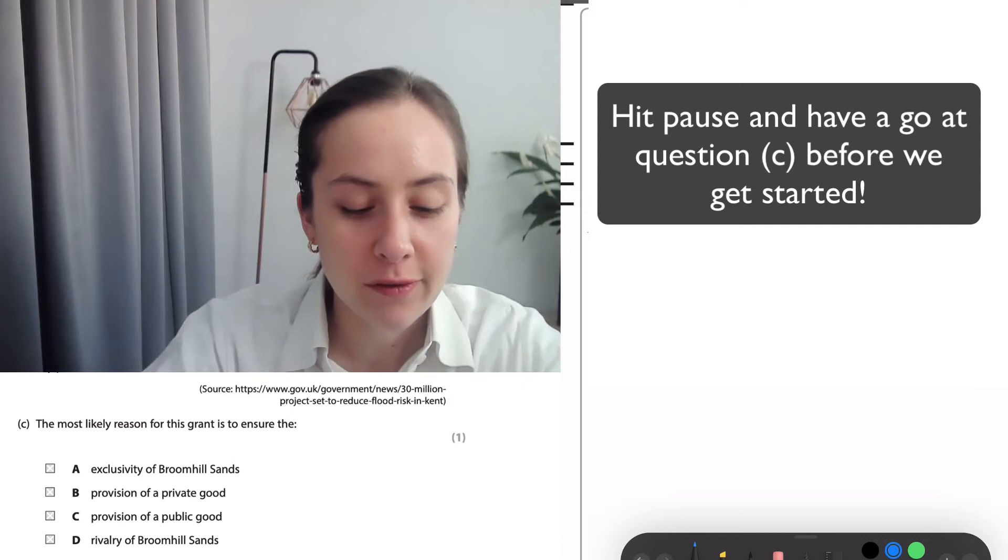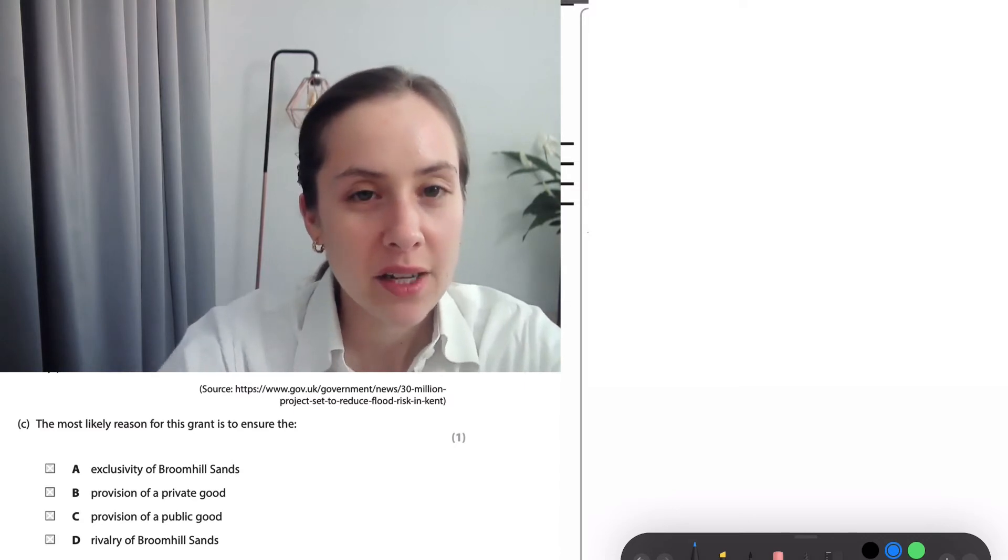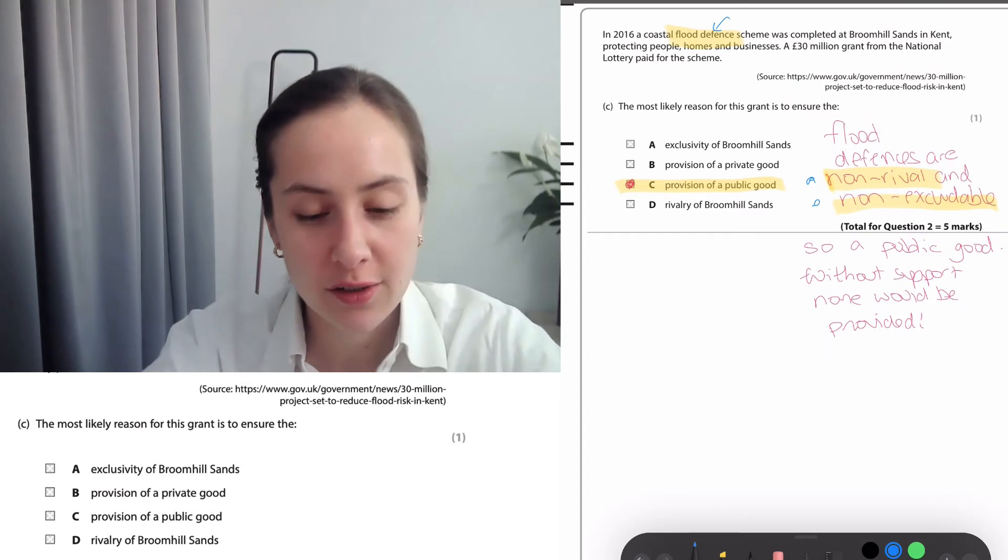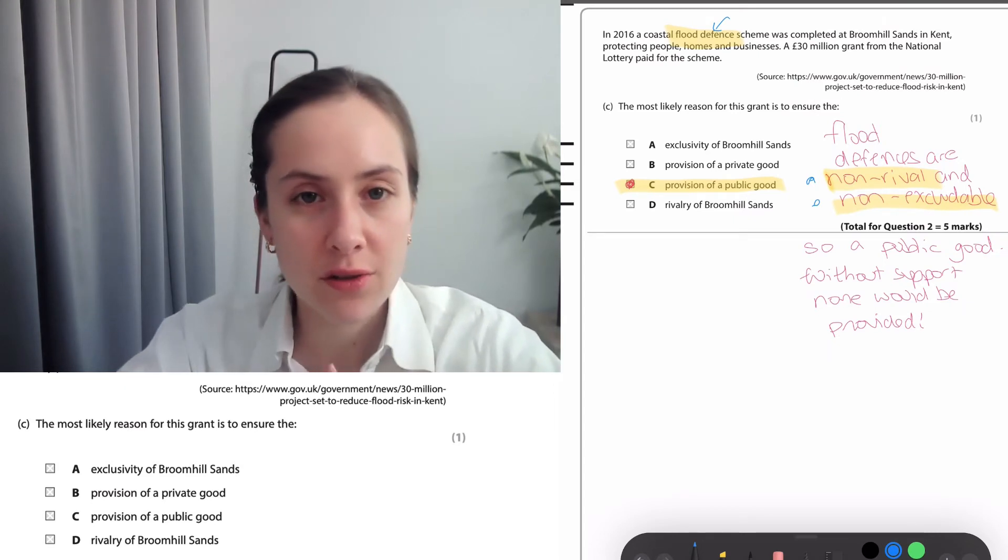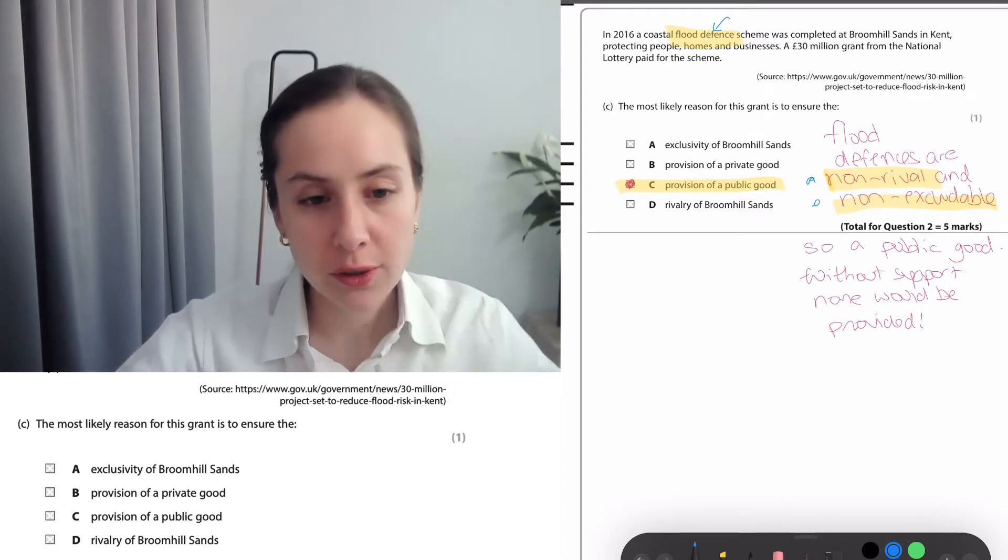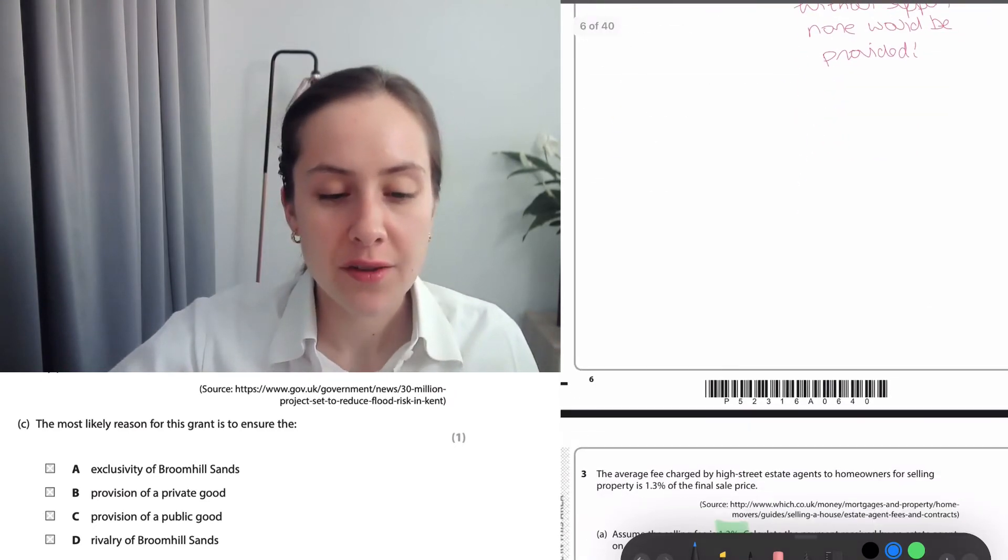Here, a grant was given to a flood defense scheme. Immediately that should kind of ring non-rival, non-excludable. It's a public good. Public goods cause market failure because there's not any incentive to produce these in the market, so clearly we need flood defenses and this was something that the government had to provide.